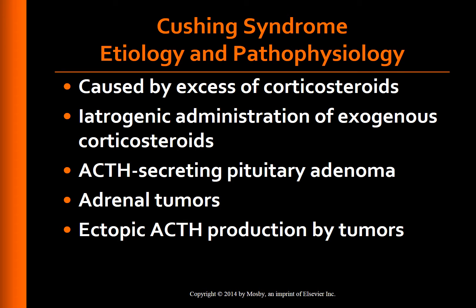Cushing syndrome is a clinical condition that results from chronic exposure to excess corticosteroids, particularly glucocorticoids. The most common cause is iatrogenic administration of exogenous corticosteroids, for example prednisone. Approximately 85% of endogenous Cushing syndrome cases are due to an adrenocorticotropic hormone (ACTH)-secreting pituitary adenoma, or Cushing's disease. Other causes include adrenal tumors and ectopic ACTH production by tumors, usually of the lung or pancreas, outside of the hypothalamic-pituitary-adrenal axis.